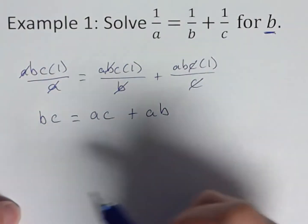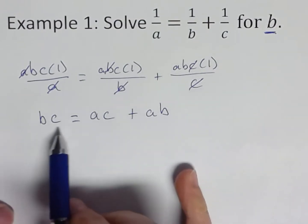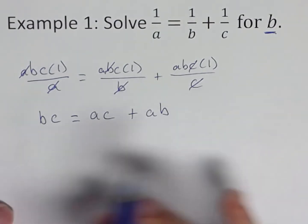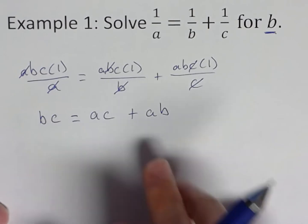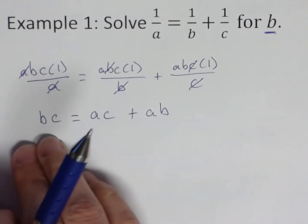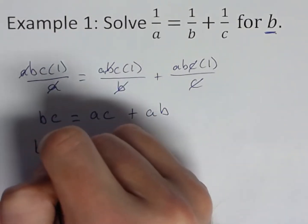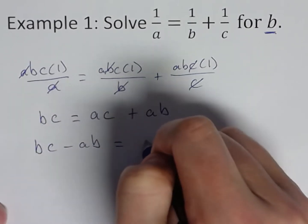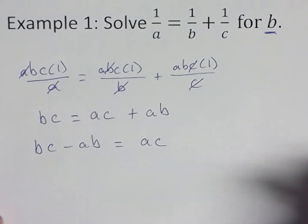Now our goal is to isolate B. So I've got a B here, I have a B here. Let's get those on the same side of the equation. So I'm going to subtract A, B over. So B, C minus A, B equals A, C.